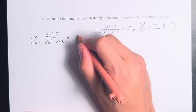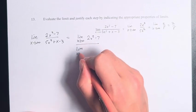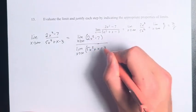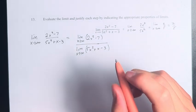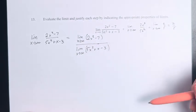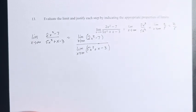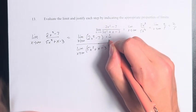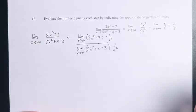First, we're going to take the limit of the numerator divided by the limit of the denominator. Then, since we have a fraction, we can multiply both the numerator and the denominator by the same thing and get an equivalent value. So, we're going to multiply both by 1 over x squared, which is the largest degree of x that we have.